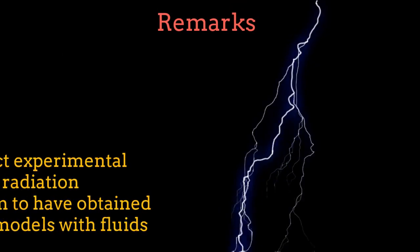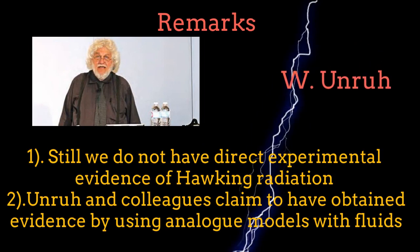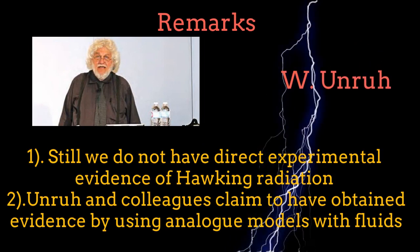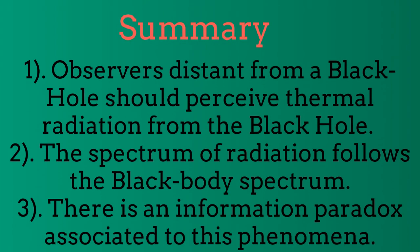The first evidence of Hawking radiation is claimed to have been found by using analog models of black holes with fluids. In summary, there is a spectrum of radiation coming from the black hole. The spectrum follows precisely the black-body spectrum. Since the radiation does not carry information, there is an associated information paradox in black hole physics.